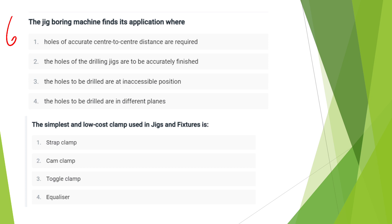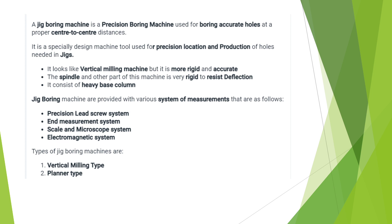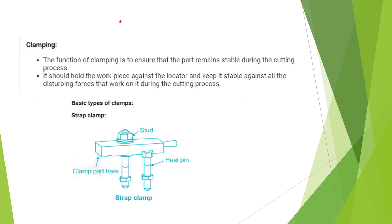The jig boring machine finds its application where holes of accurate center-to-center distance are required. The simplest and lowest-cost clamp used in jigs and fixtures is the strap clamp. The jig boring machine has precision and uses various systems: the precision lead screw system, end measuring system, scale and microscope system, and electro-magnetic system. Jig boring machines have two types — vertical milling machines and planar type.